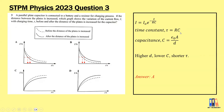The capacitance C is affected when the distance between the plates is increased. With higher distance, we get lower capacitance, and with lower C we get a shorter time constant. A shorter time constant means the current drops to 37% of its initial value faster. The dotted line is before and the solid line is after the increase, so the answer is A.